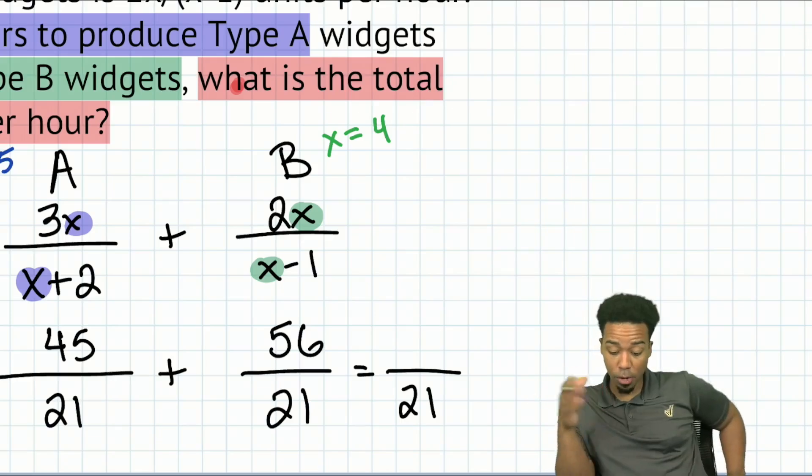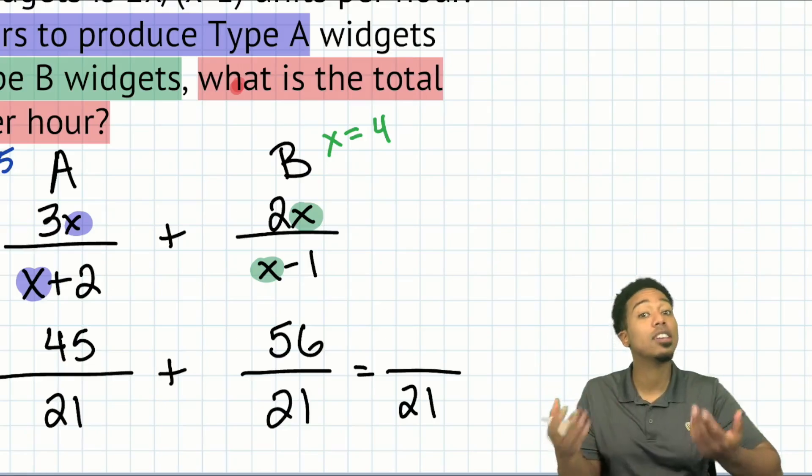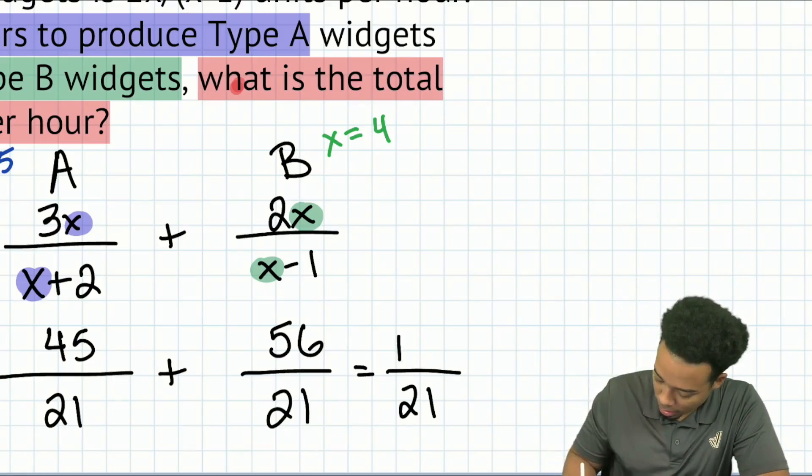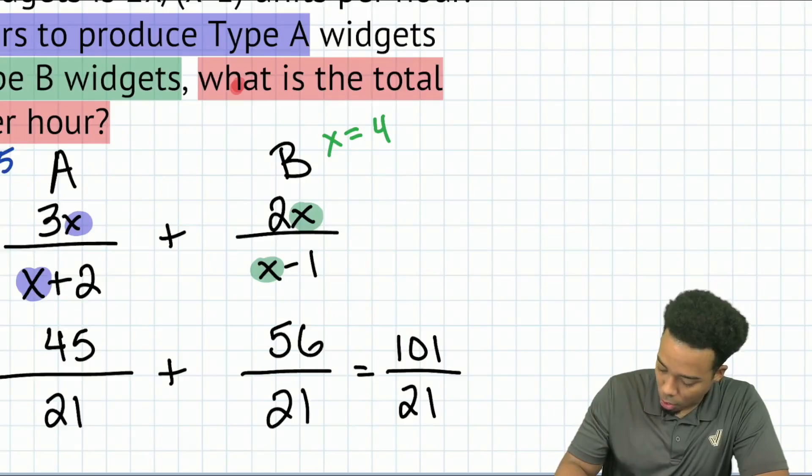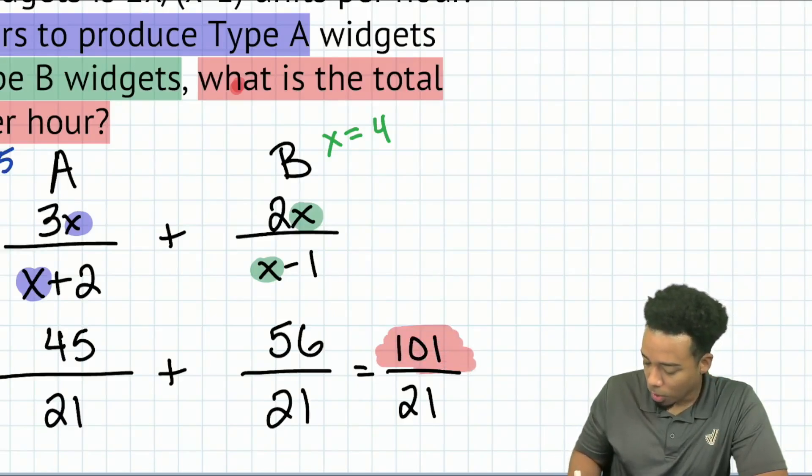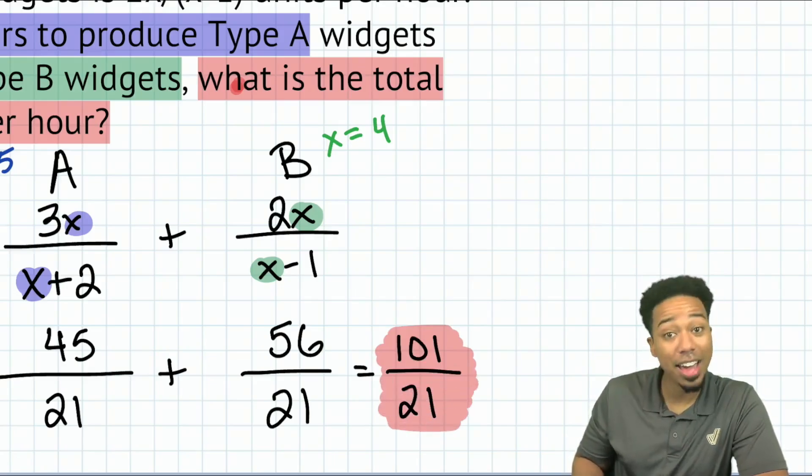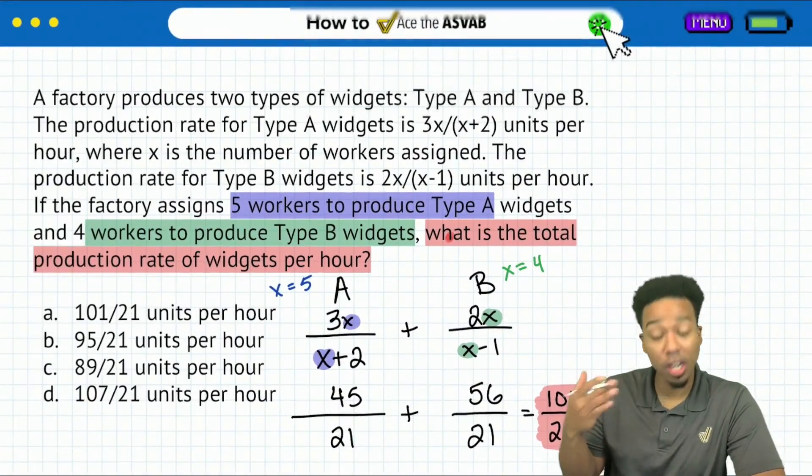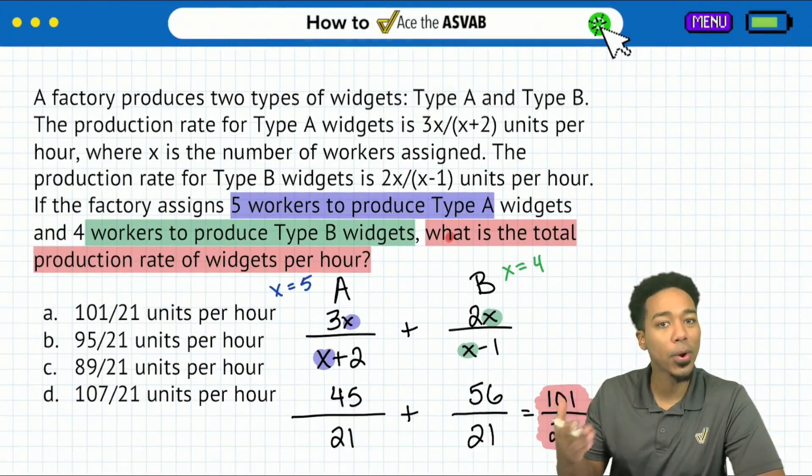Well, we can say 40 plus 50 is 90. 5 plus 6 is 11. 90 plus 11 is 101. So 101 over, I'm going to highlight this in red,